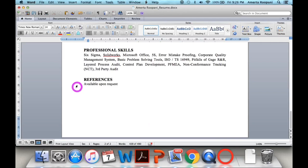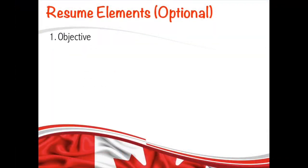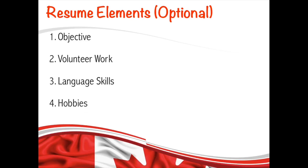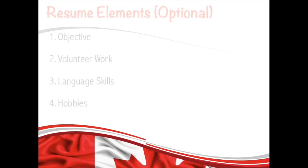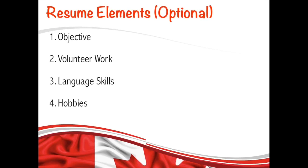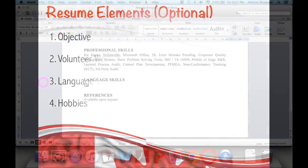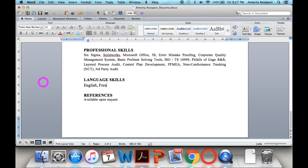The last element in my resume is 'References available upon request,' because I don't want to provide them until the employer asks. There are also some other optional sections you can add, such as an objective statement, volunteer work, language skills, and hobbies. Language skills can be very important in some companies — for example, companies with clients in different countries may require travel, so knowing multiple languages is a plus point. Whether to add these depends on which company you are applying to.